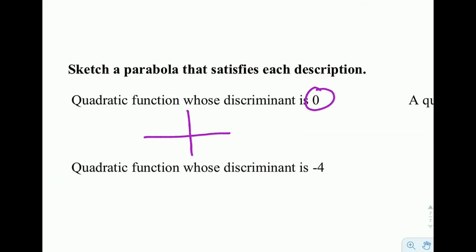So discriminant zero means that we have exactly one real solution, so something like that would be an example of an answer.